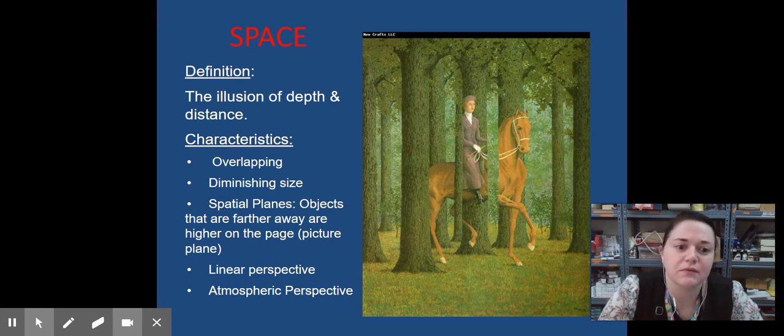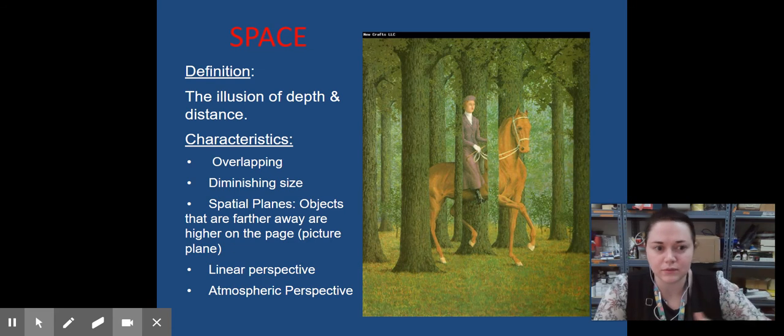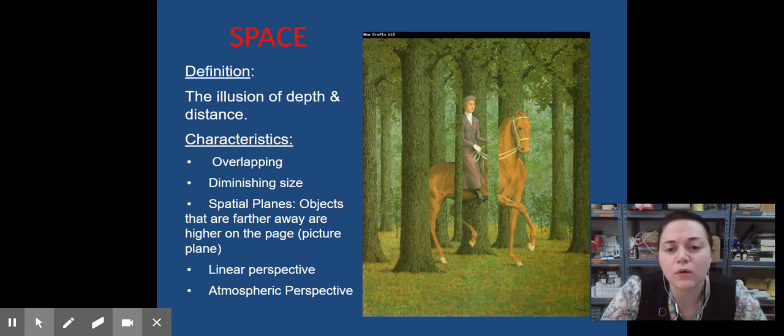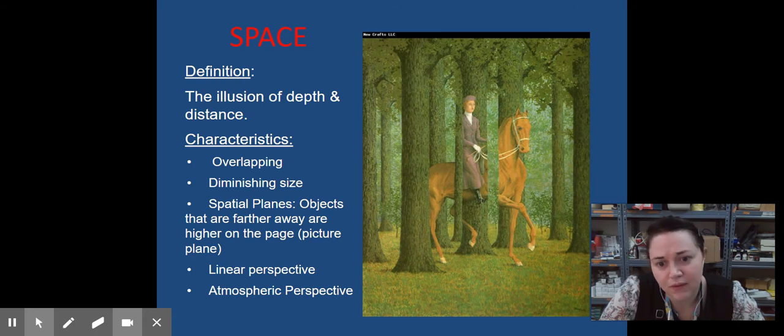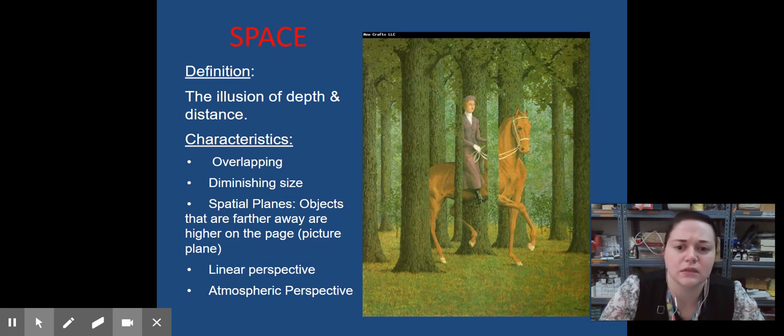So far in this class we've gone over negative space which is the space behind or around an object, but there's more than one way to create the illusion of space. You can use overlapping, diminishing size, spatial planes, linear perspective, or atmospheric perspective. Out of all of these we're going to cover first linear perspective and atmospheric perspective.